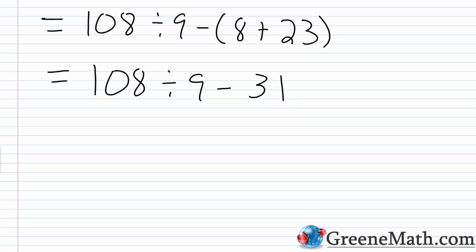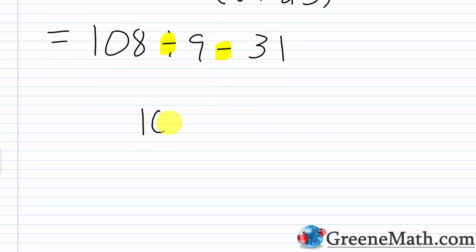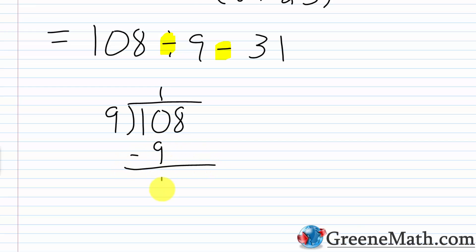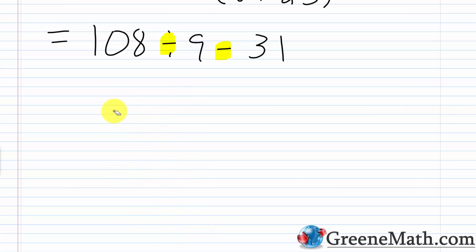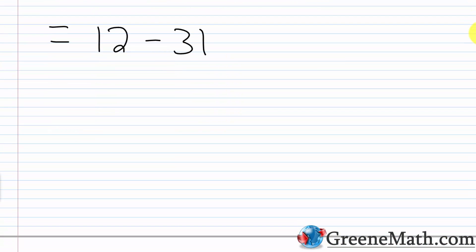Now the problem is very simple. We have division and we have subtraction, so I want to divide before I subtract. What is 108 divided by 9? I don't know that off the top of my head, so we could quickly do long division. 9 goes into 10 once, 1 times 9 is 9, subtract to get 1 and bring down the 8. 9 goes into 18 twice, 2 times 9 is 18, subtract and get 0. So the answer is 12. 108 divided by 9 is 12, and then we're subtracting away 31. So 12 minus 31.